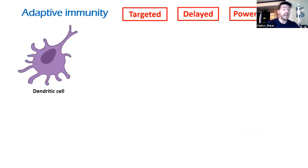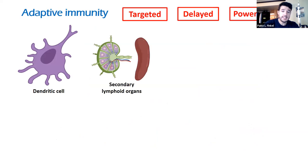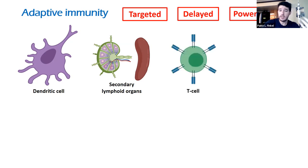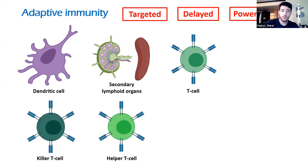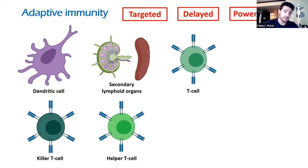Adaptive immunity is targeted, delayed by a few days, but very powerful. Dendritic cells — actually innate cells — present a piece of the pathogen called an antigen in secondary lymphoid organs like lymph nodes or the spleen, activating lymphocytes such as T-cells. There are two types of T-cells: the killer T-cell (CD8 positive), which kills tumor cells and virally infected cells with high efficiency, and the helper T-cell.